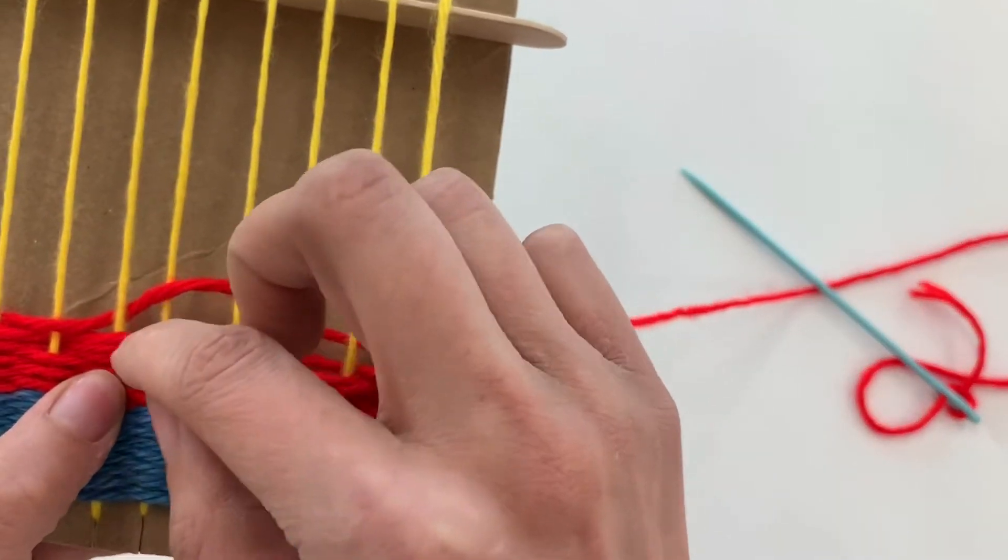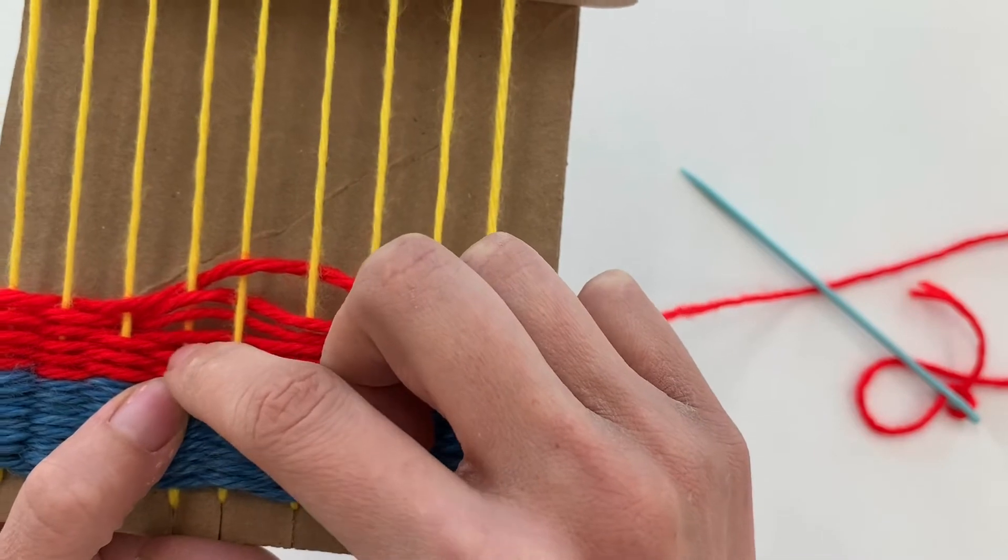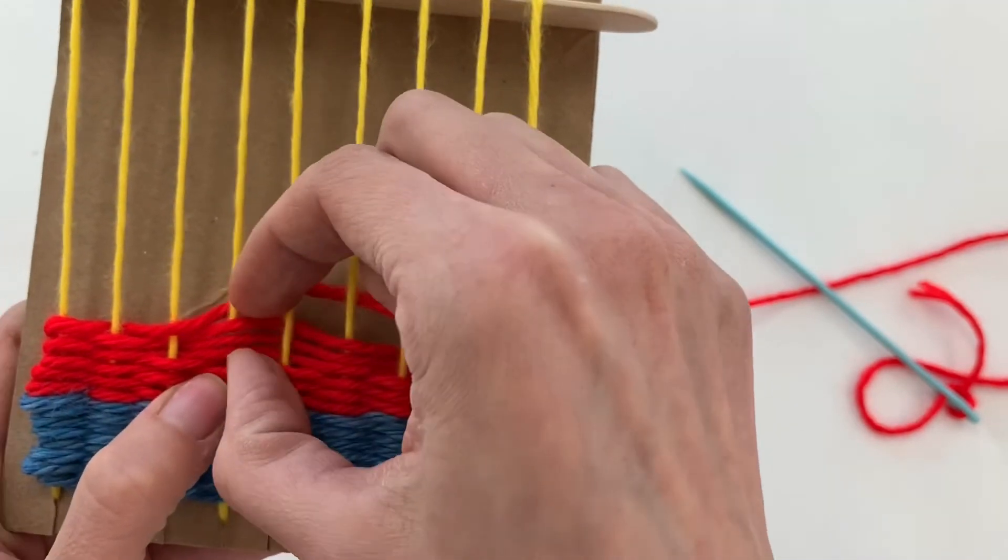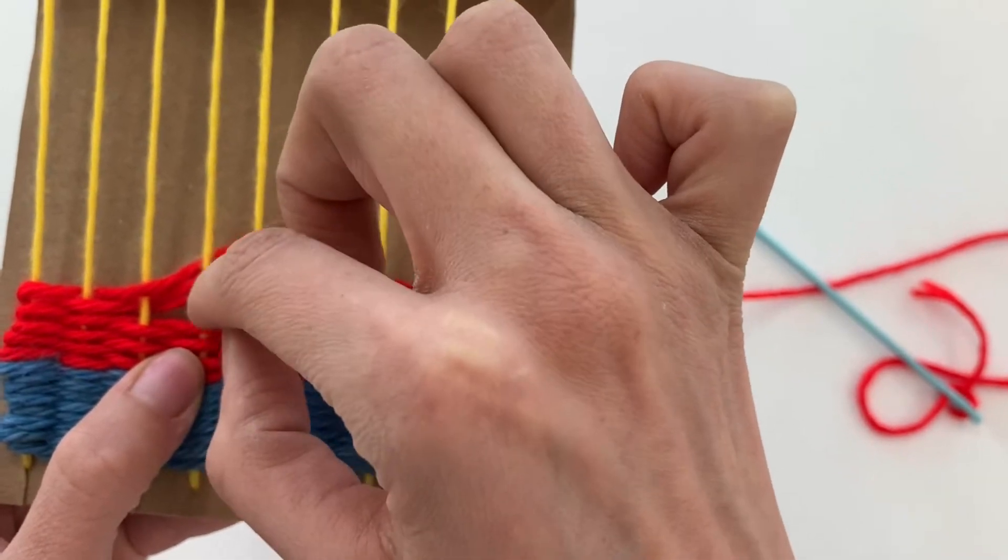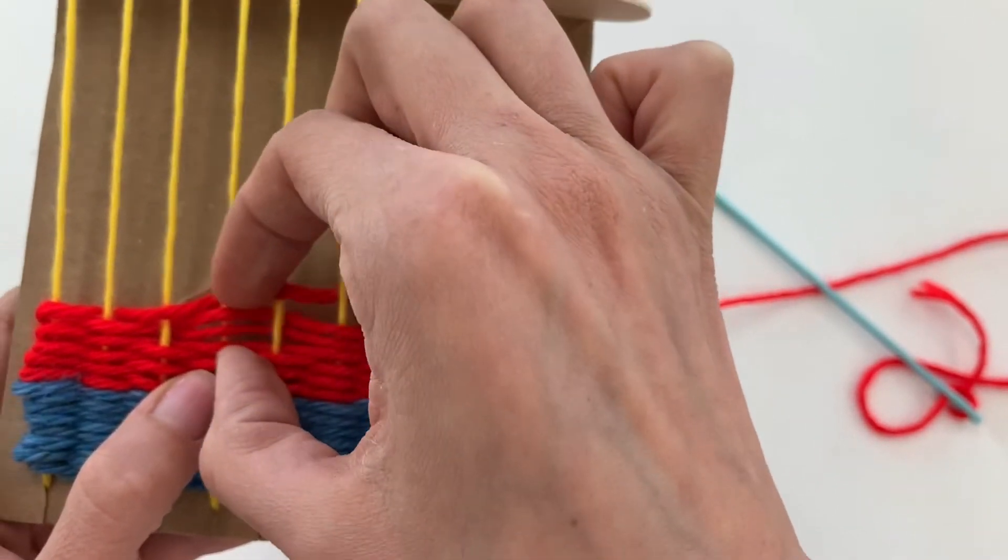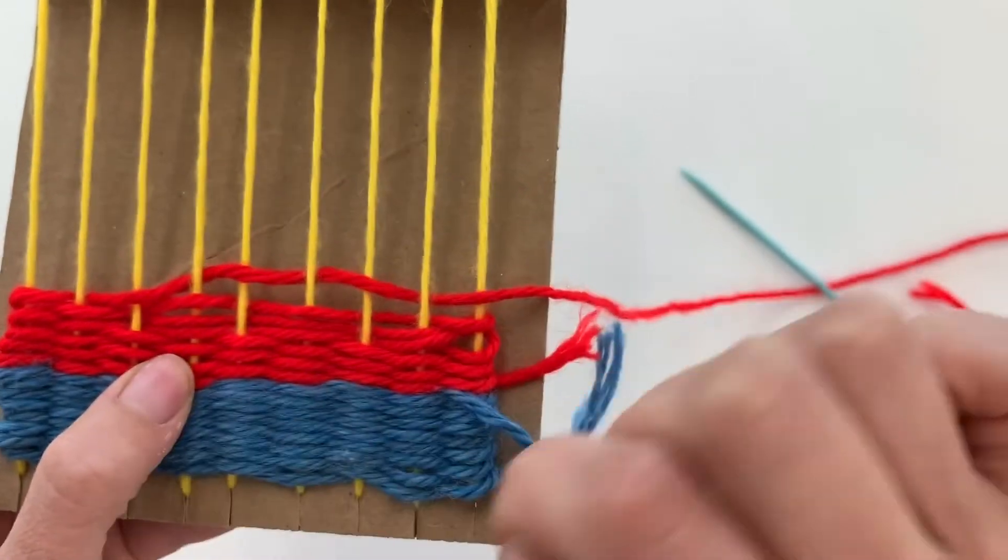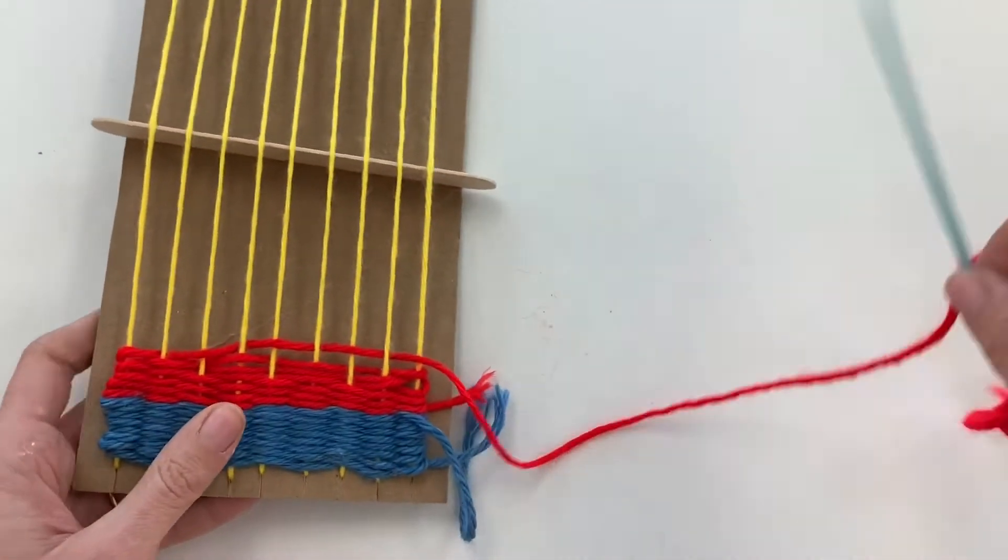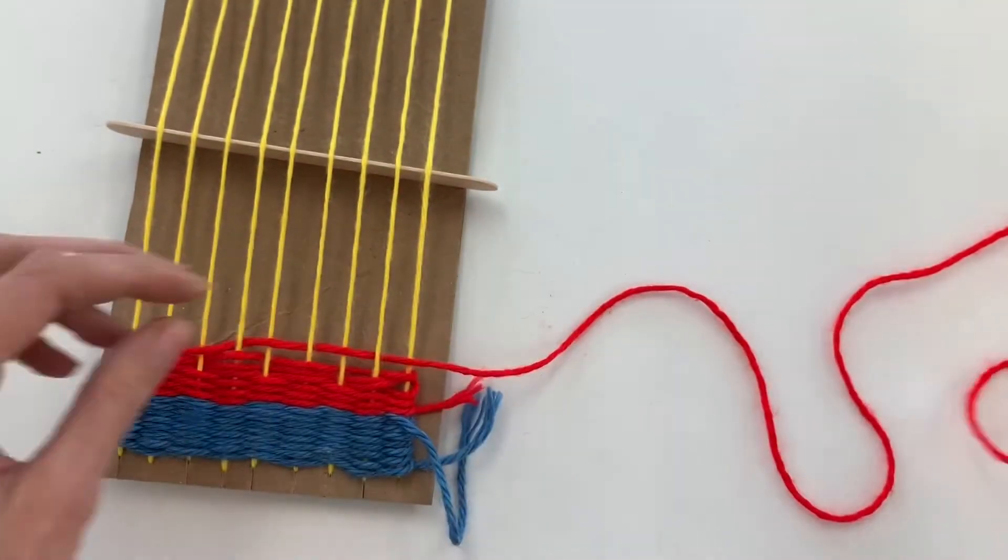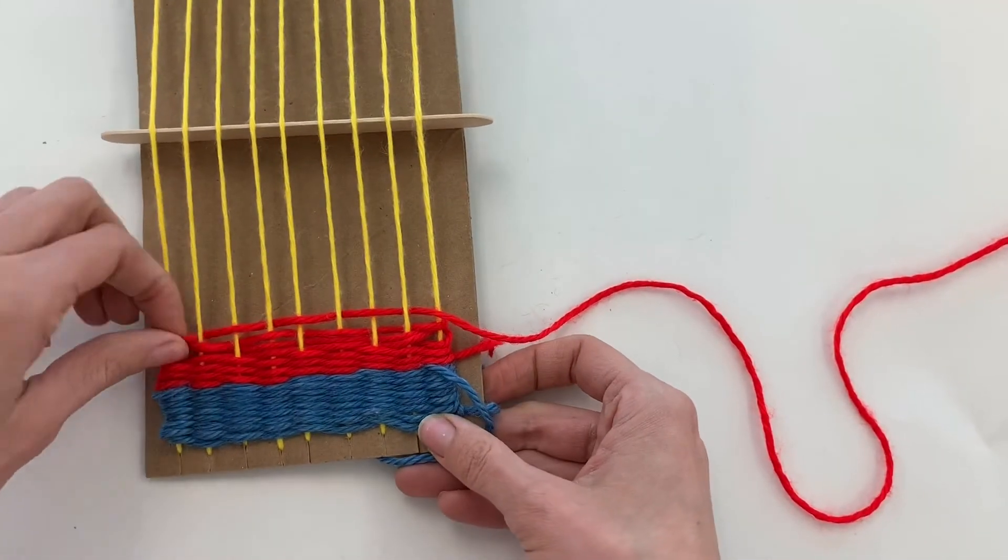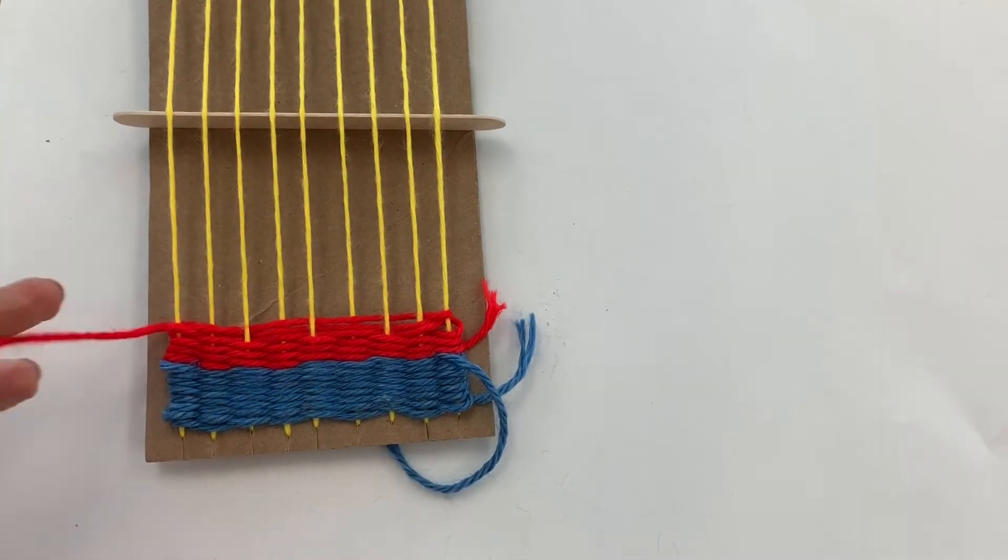You can also tell I made a mistake because you can see that I have three in a row that went over this warp string. You should never have more than one that goes over a warp string at a time. So since I have three here, it means that I either made one or two mistakes along the way. So what I'm going to do is I'm just going to take the yarn off of my weaving needle and I'm going to go to this end and pull this row back out and see if I can find where I made my mistake.